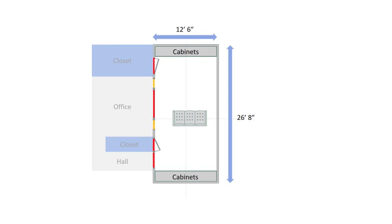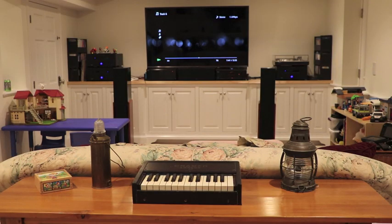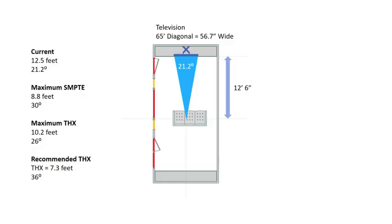This roughly 333 square foot area also has counter-height cabinets situated on each end, which impact the design. Determining the positions for your screen and main seating is a great place to start. My current setup is with a 65-inch television and a seating position 12 and a half feet away. This results in a 21.5-degree viewing angle, which is below the recommended practices for both SMPTE and THX.